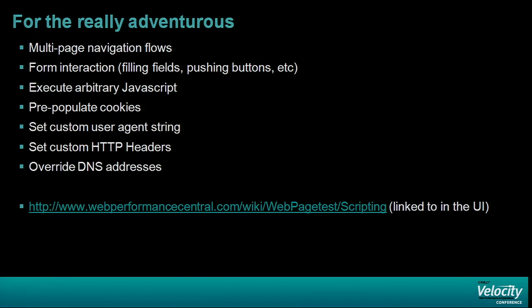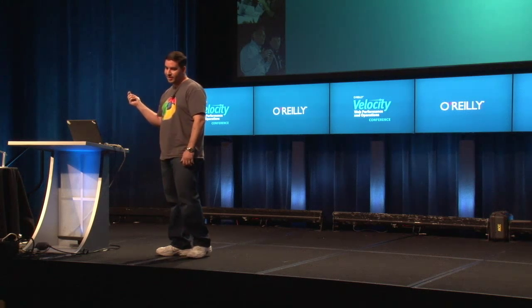You can set any arbitrary HTTP headers. You can override the DNS lookup — so if you want to test your production page but on your dev box, you can still use production domains and just reroute to your dev box. There's a whole bunch of documentation on the scripting language linked in the UI.